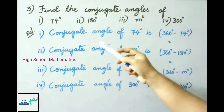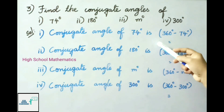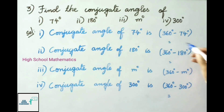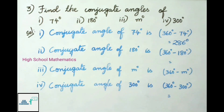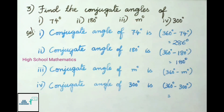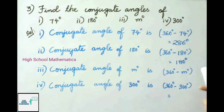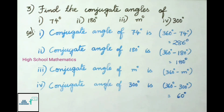Let us see the solution. Conjugate angle of 74 degrees is 360 minus 74, that is 286 degrees. Second one: conjugate angle of 180 degrees is 360 minus 180, that is 180 degrees. Third one: conjugate angle of m degrees is 360 degrees minus m degrees. Fourth one: conjugate angle of 300 degrees is 360 minus 300, that is 60 degrees.